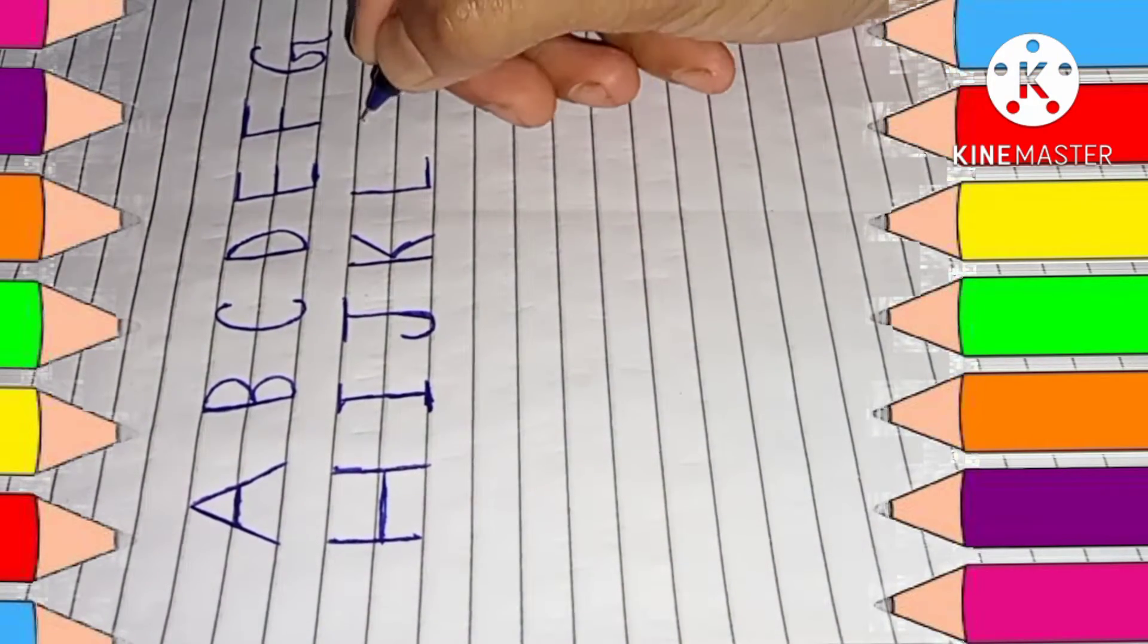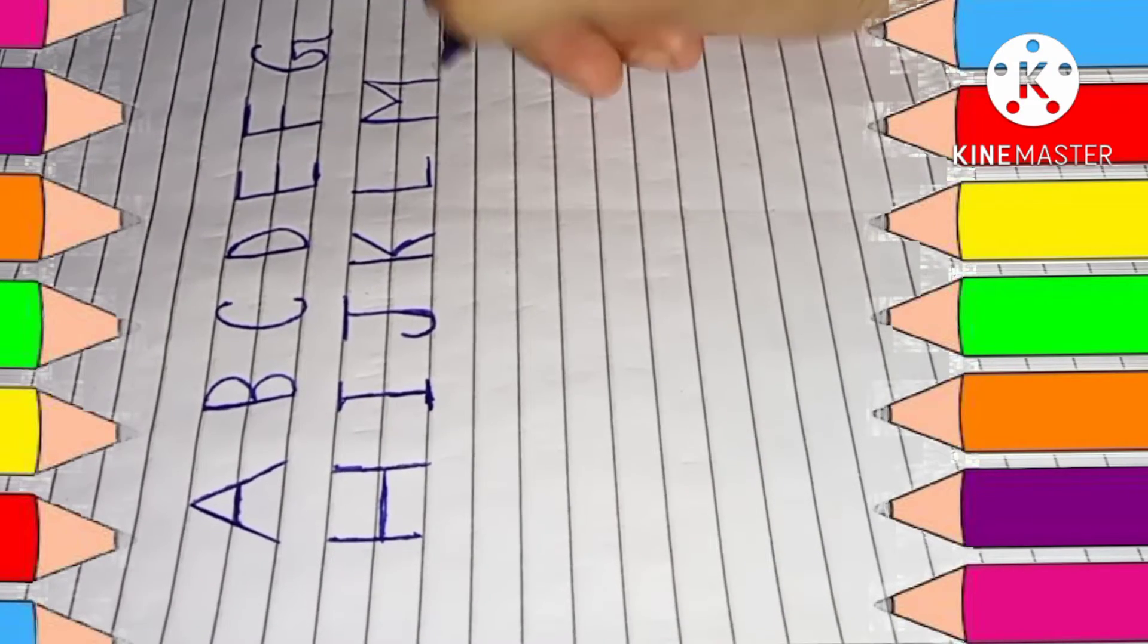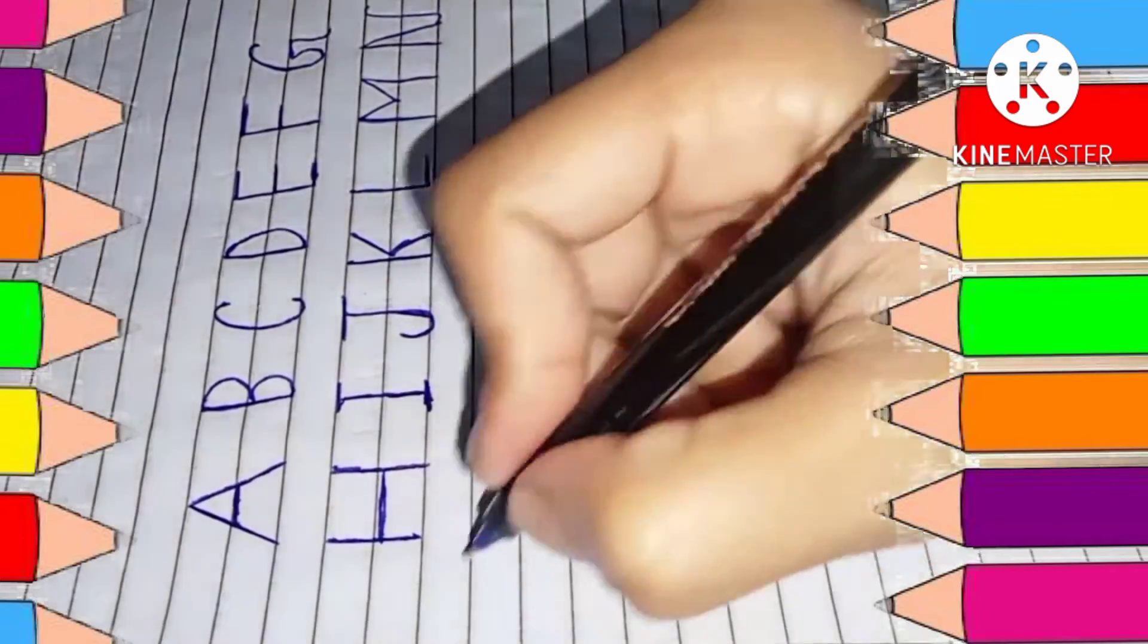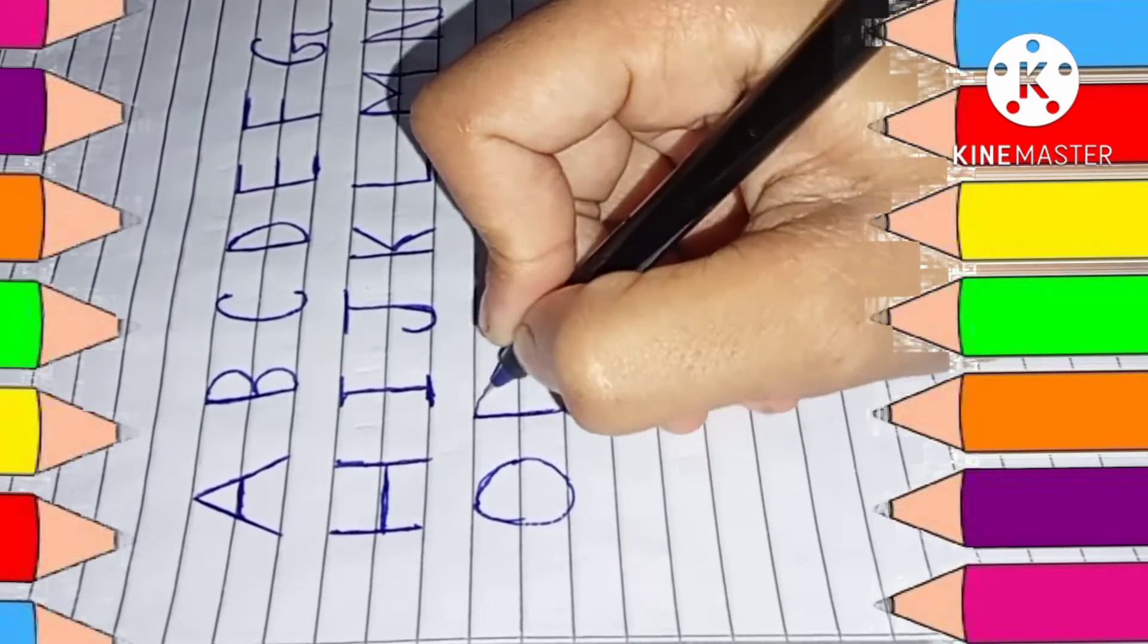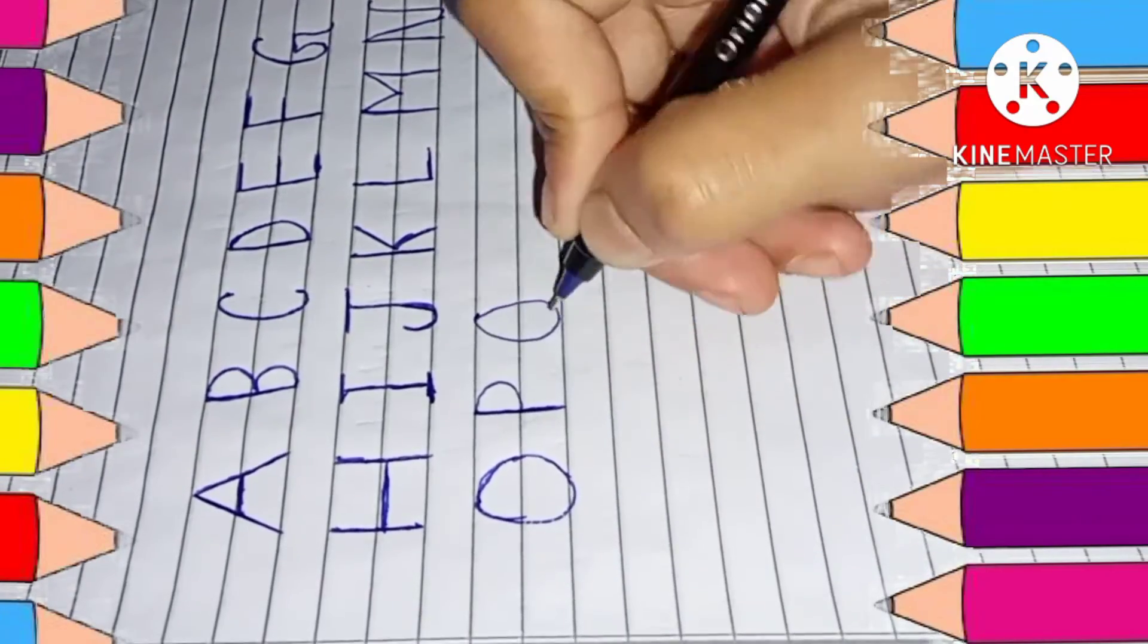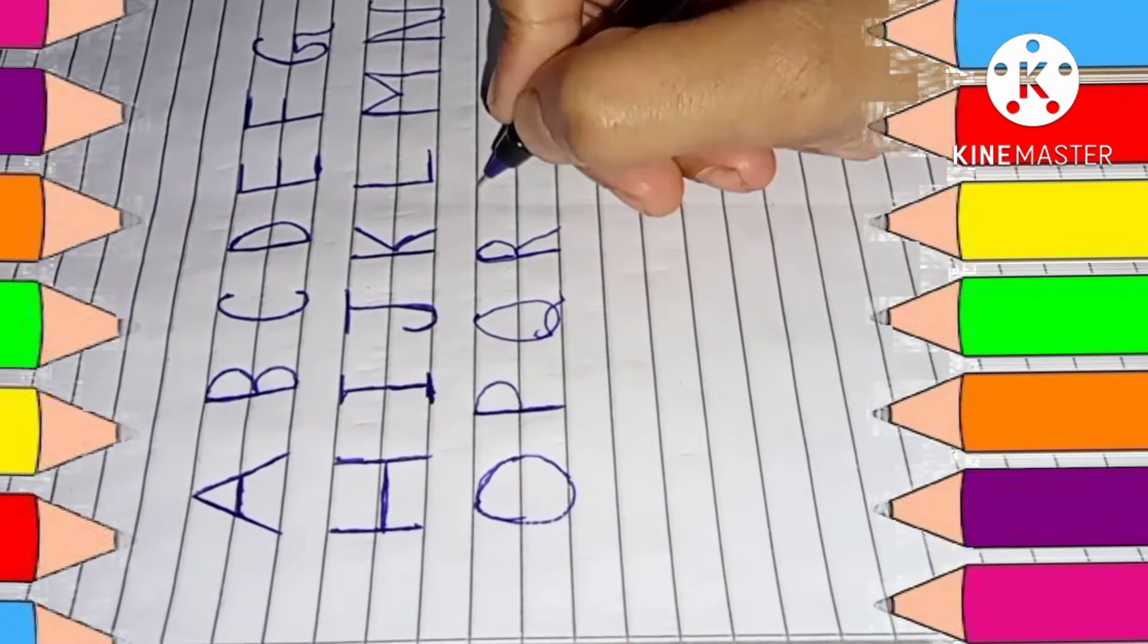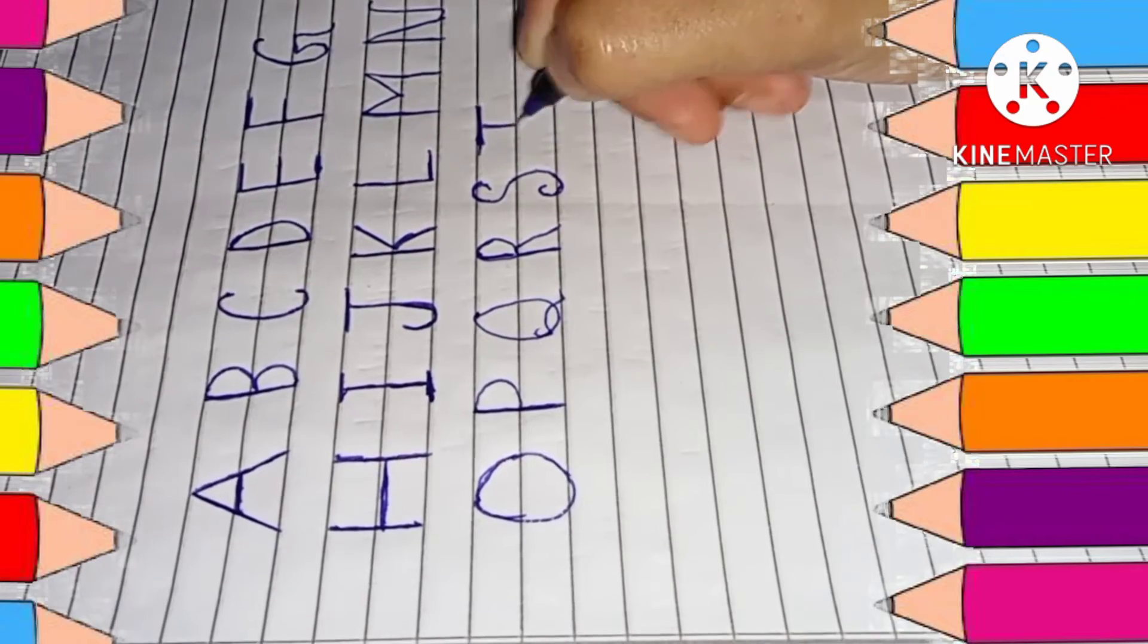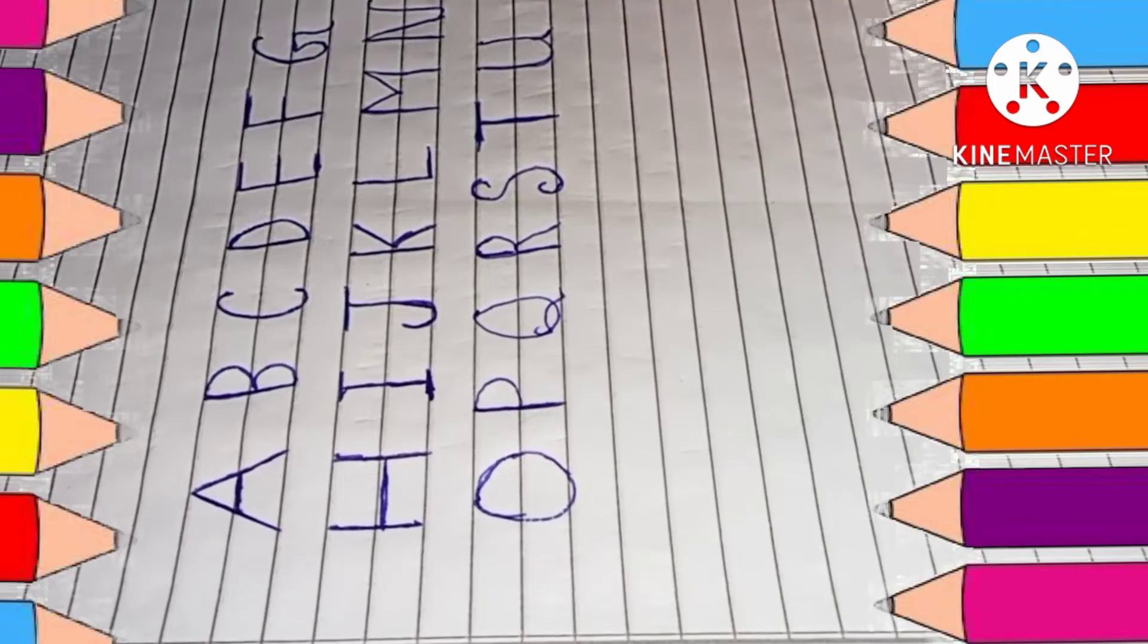L for lion, M for monkey, N for nose, O for octopus, P for pencil, Q for queen, R for rabbit, S for snake, T for tiger, U for umbrella.